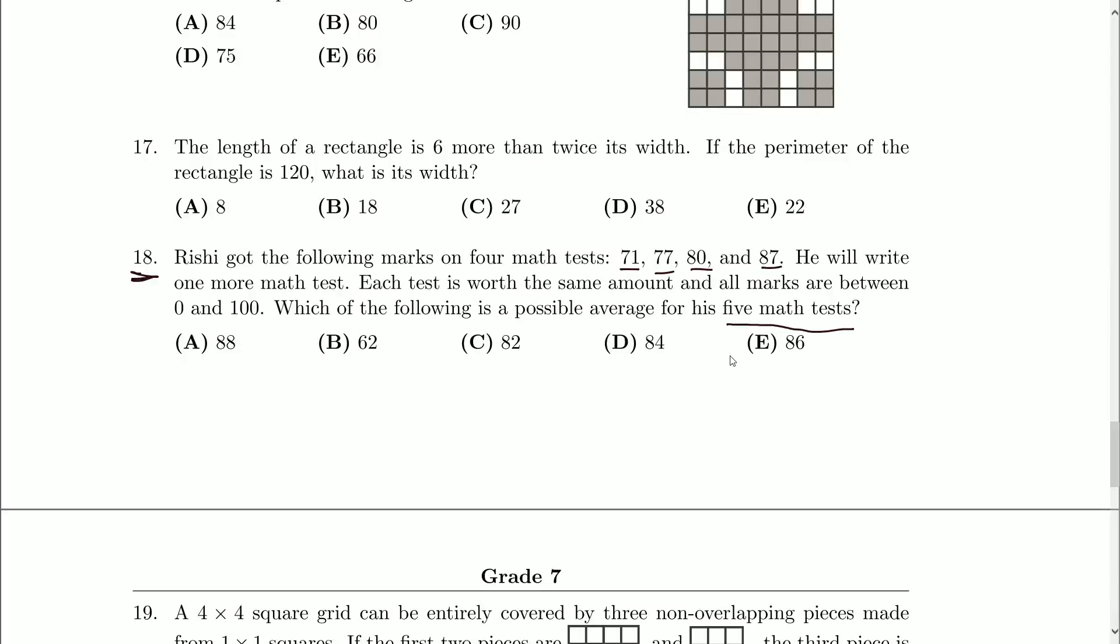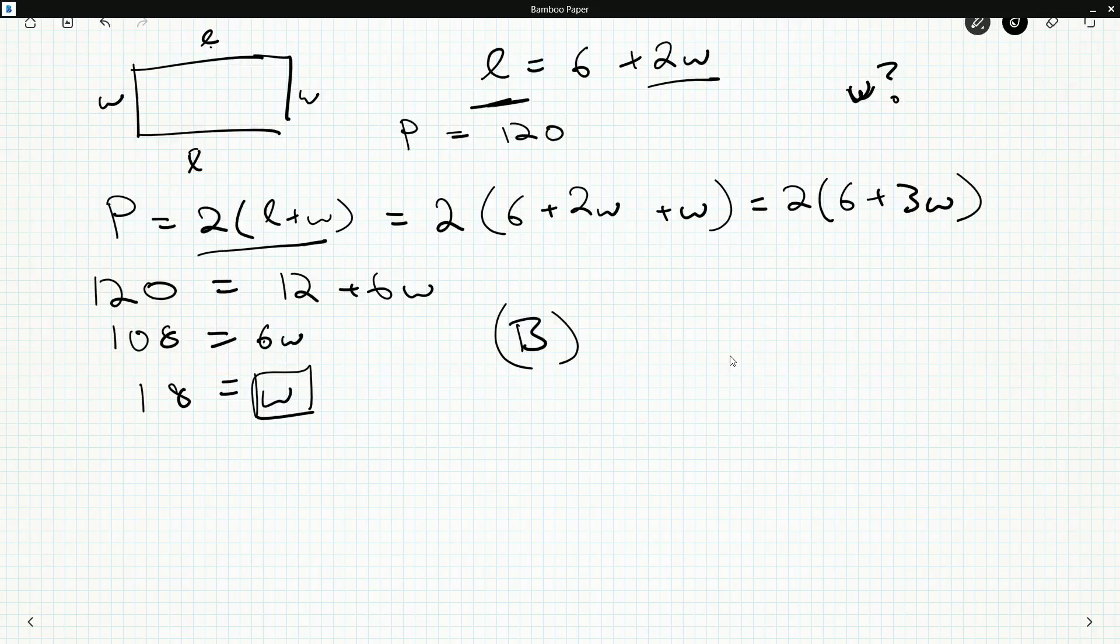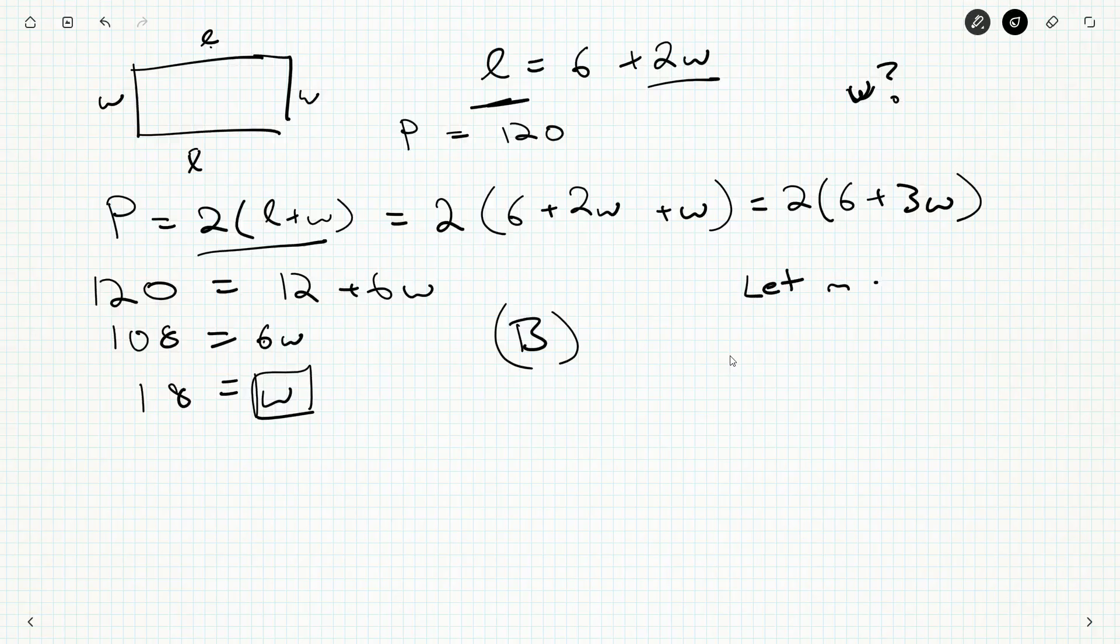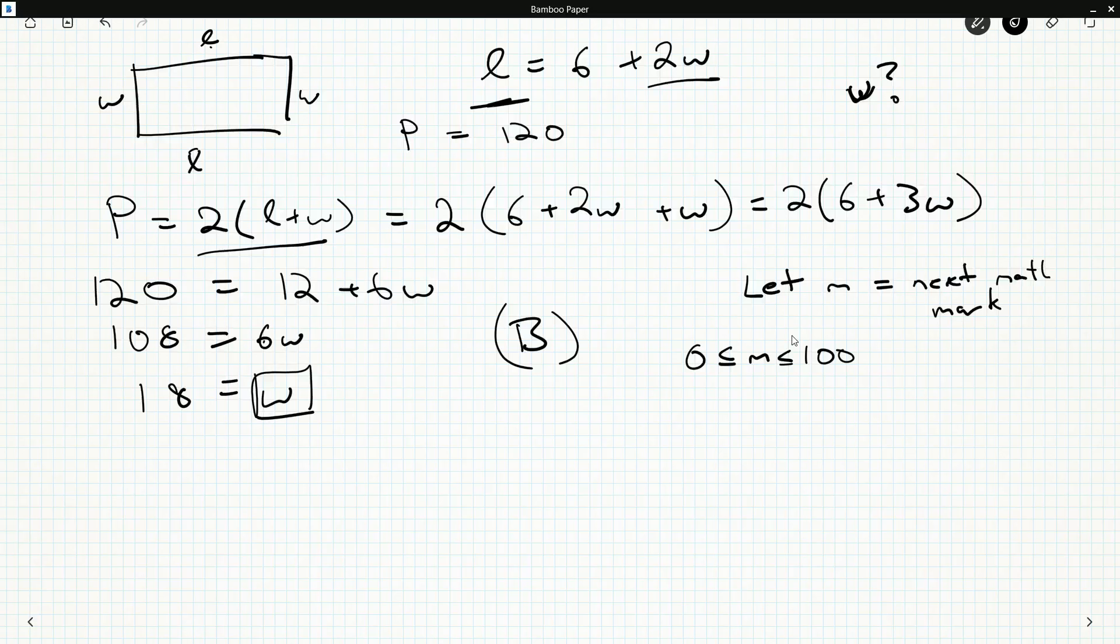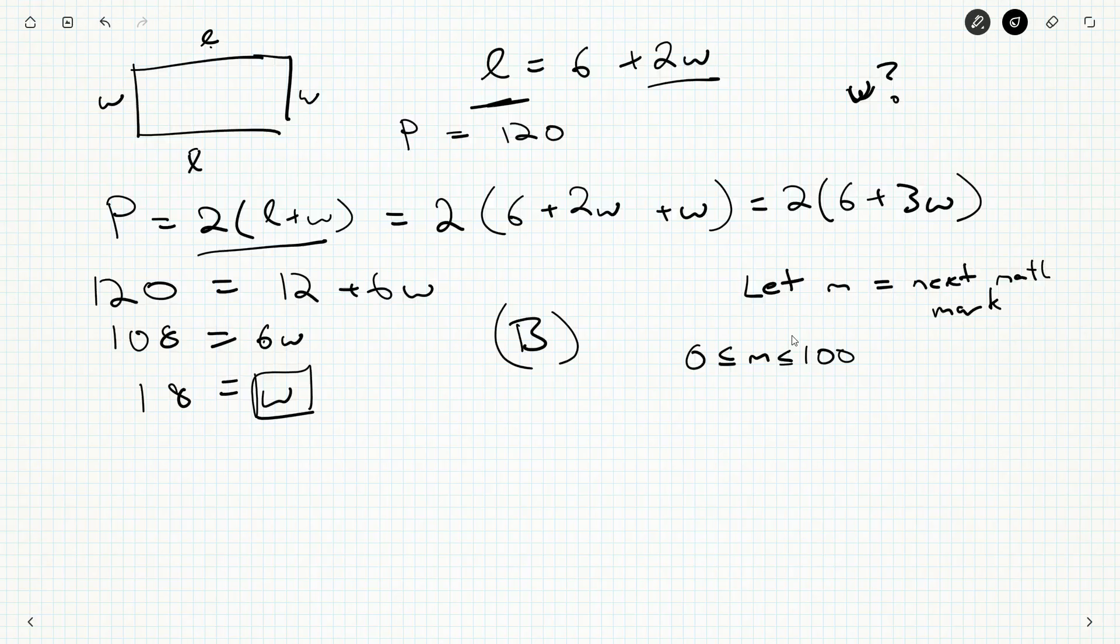Now, I don't know what mark he's going to get on his next math test. I might leave that as a variable, as an unknown. So I might say something like, let m equal the next math mark. Now, the only thing I know is m is between 0 and 100. How do I calculate average? Well, average is we add everything up and divide by 5.